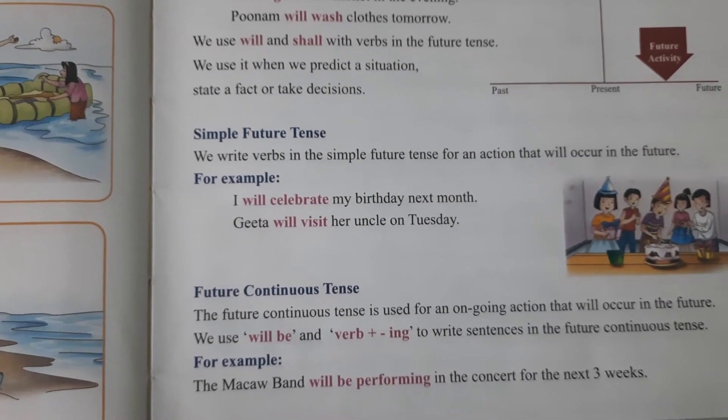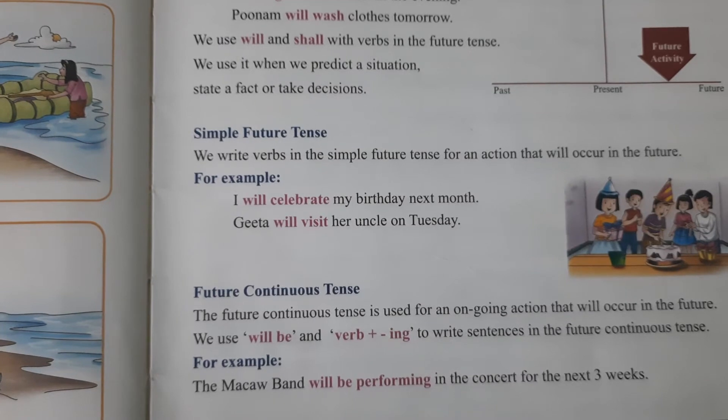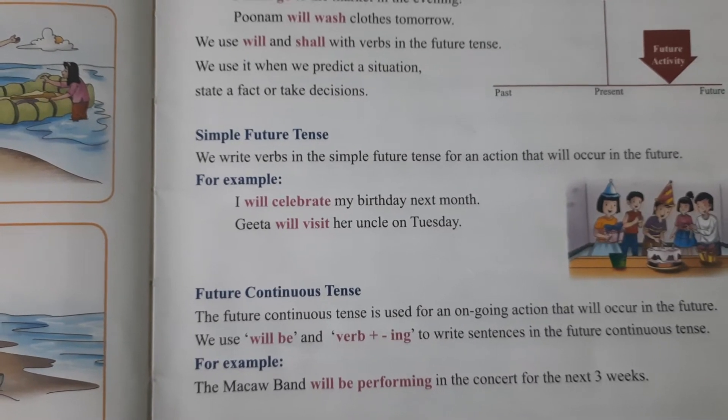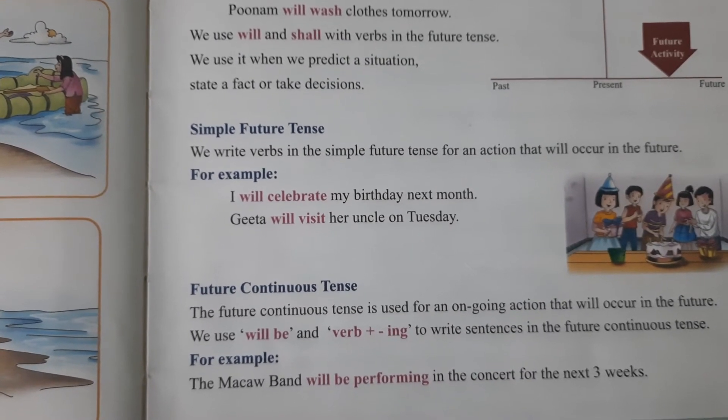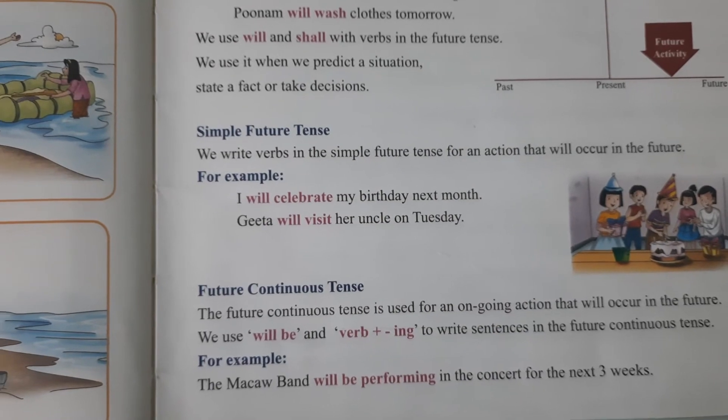Another example: Gita will visit her uncle on Tuesday. So Gita is speaking about something that will happen on Tuesday — that is future tense.